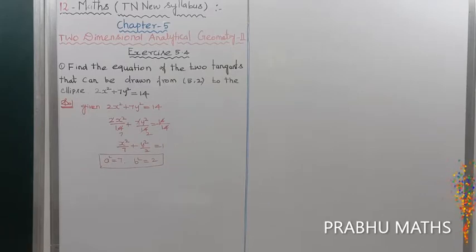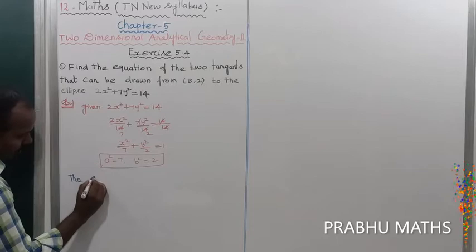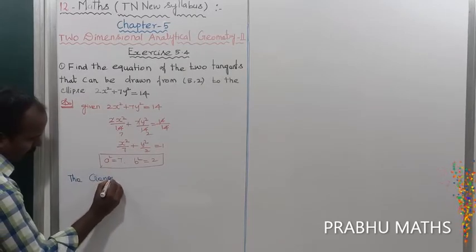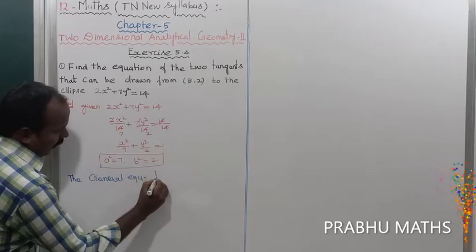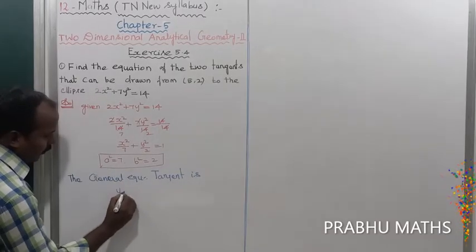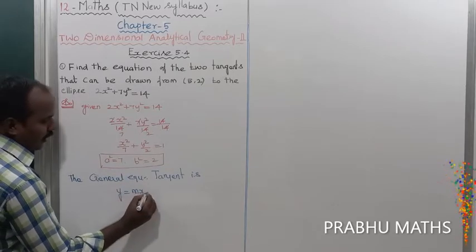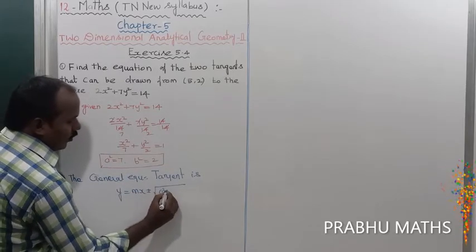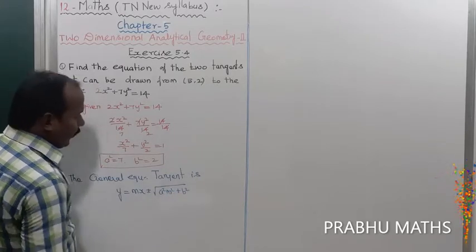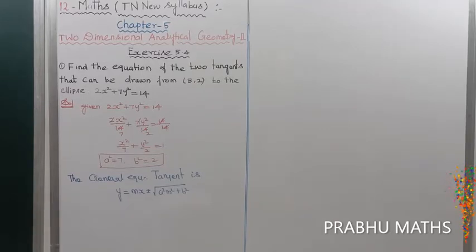The general equation of the tangent to an ellipse is y = mx ± √(a²m² + b²). So the formula is y = mx ± √(a²m² + b²), where a² = 7 and b² = 2.